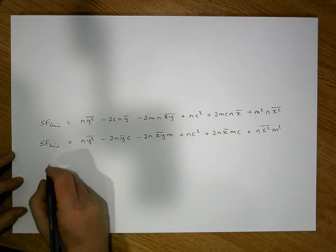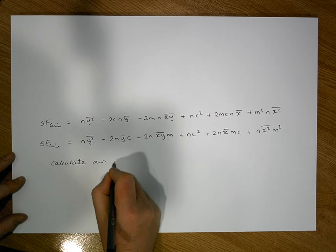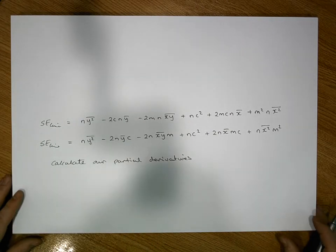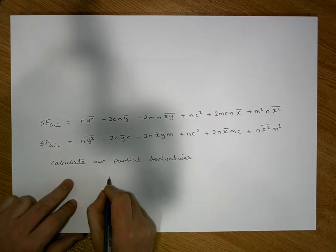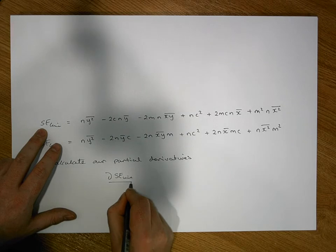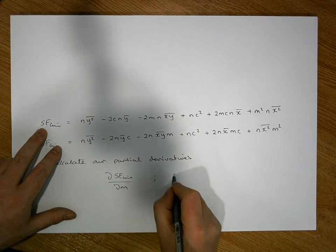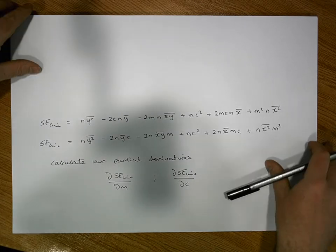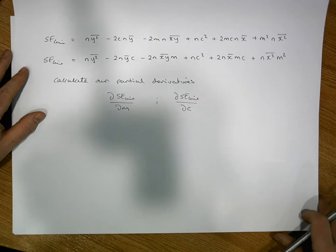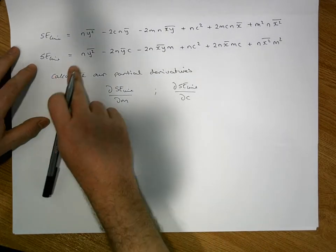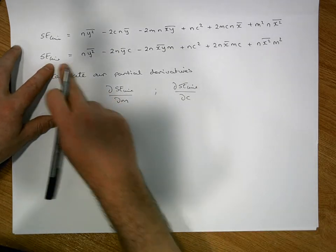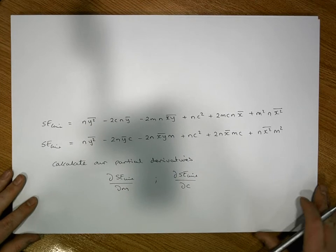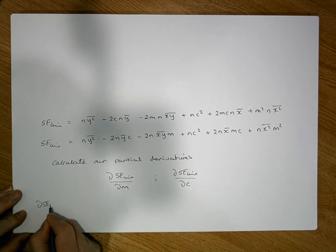We need to minimize this equation in two unknowns — m and c — with respect to those values. So we calculate partial derivatives. We'll calculate the partial derivative of SSE of the line with respect to m, and also the partial derivative with respect to c. When we differentiate with respect to m, everything else is treated as constant.